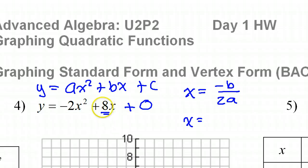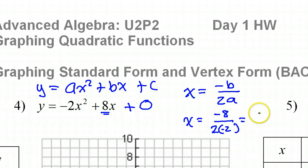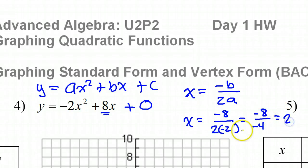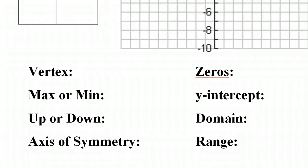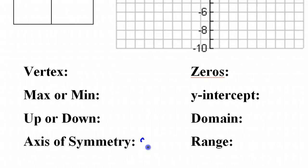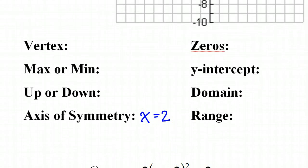So here we have the opposite of b: if b is 8, then I've got negative 8, and that's divided by 2a — well, a is negative 2. So that gives us negative 8 over negative 4, which gives us positive 2. So x equals 2 is the axis of symmetry — it's a vertical line at x equals 2.